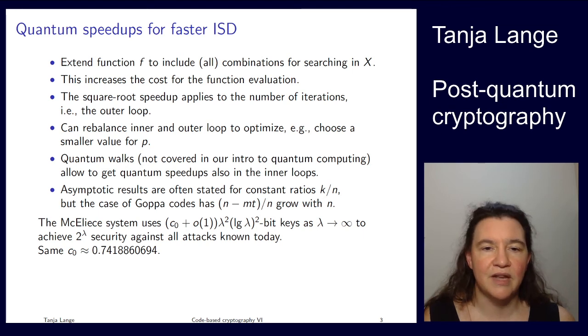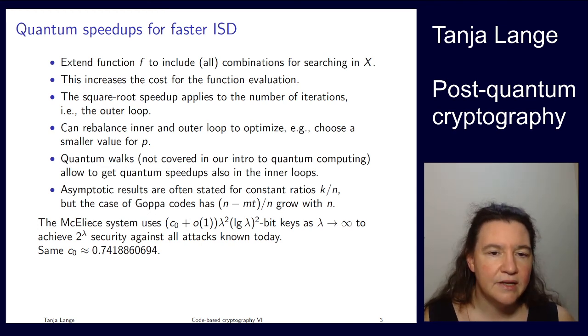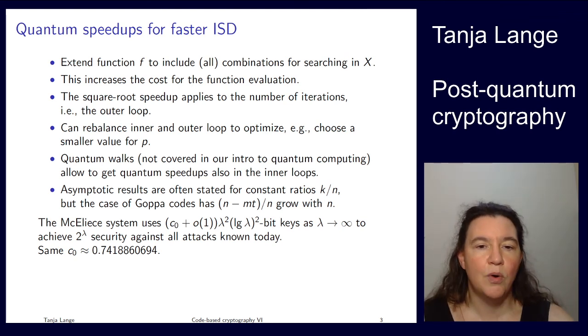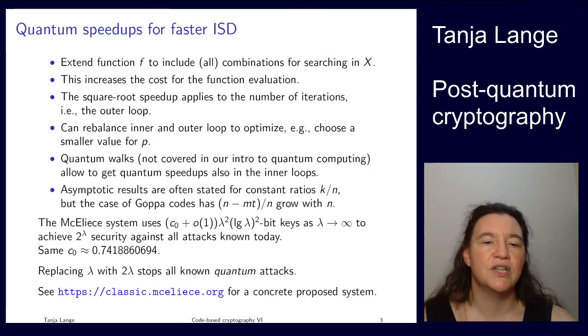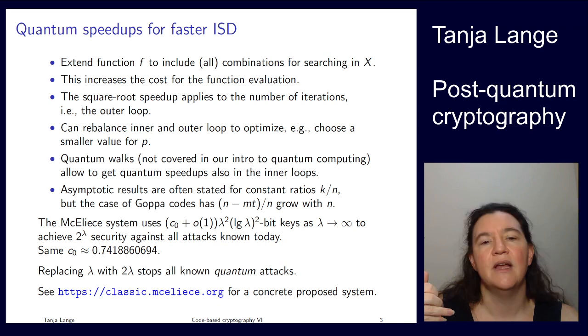So if you think about this advertisement I gave in the first lecture, saying okay, with all of these improvements that we have seen, then the cost today is still at the main constants of 0.74, etc. When you look at the best quantum attacks that we know, then we are just getting lambda replaced by 2 lambda. So the square root speedup on Grover means we have to double the security parameter, and so we are getting a factor of 4 in the key sizes.